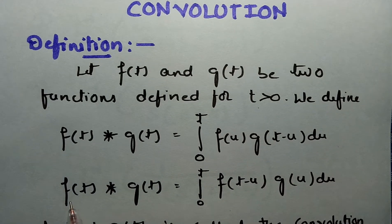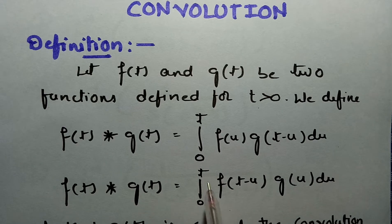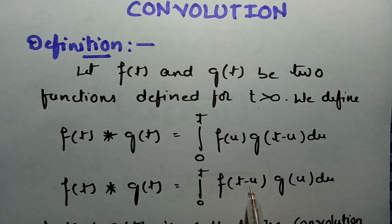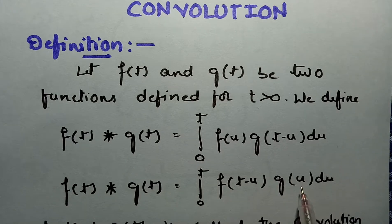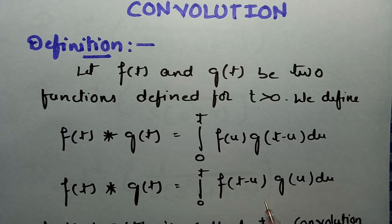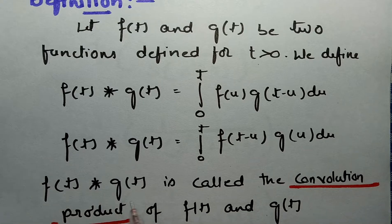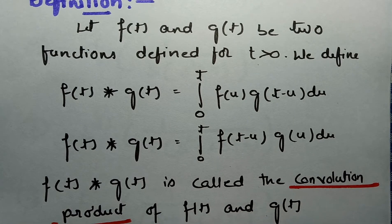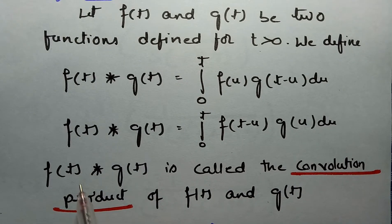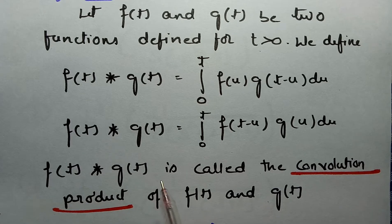Alternatively, f(t)★g(t) can be written as the integral from 0 to t of f(t−u)·g(u) du. Both forms are the same. Depending on our convenience to solve the problem we will choose either form. This product f(t)★g(t) is called the convolution product of f(t) and g(t).